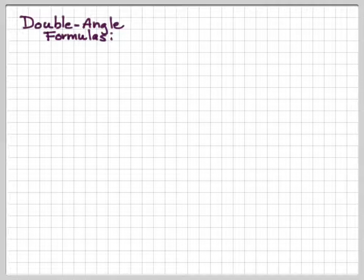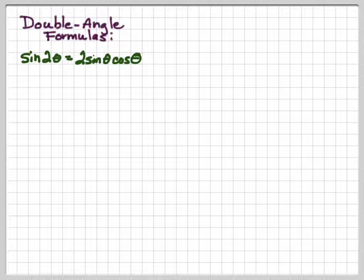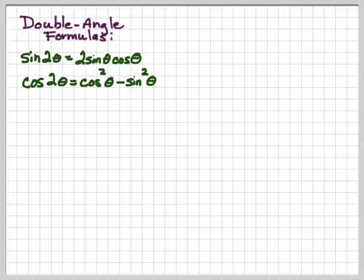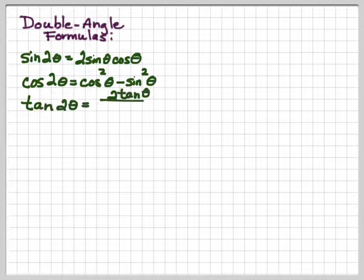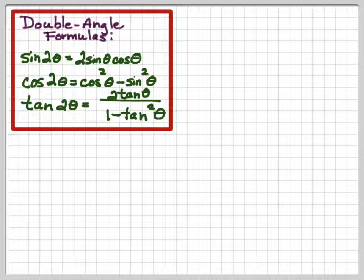Double angle formulas — this is just another way to find exact values of angles. Our double angle formulas are: sine of 2θ equals 2 sine θ cosine θ; cosine 2θ equals cosine squared θ minus sine squared θ; and tangent 2θ equals 2 tangent θ over 1 minus tangent squared θ. Notice we have 2θ each time — 2 meaning double. That's the first group you need to memorize.